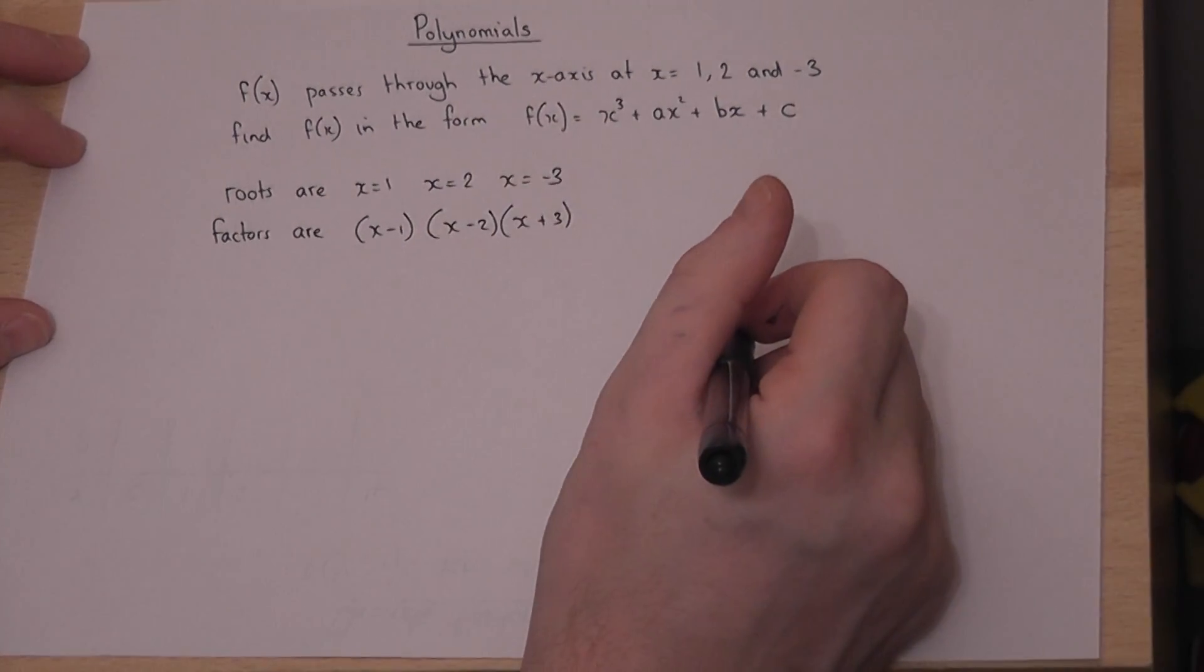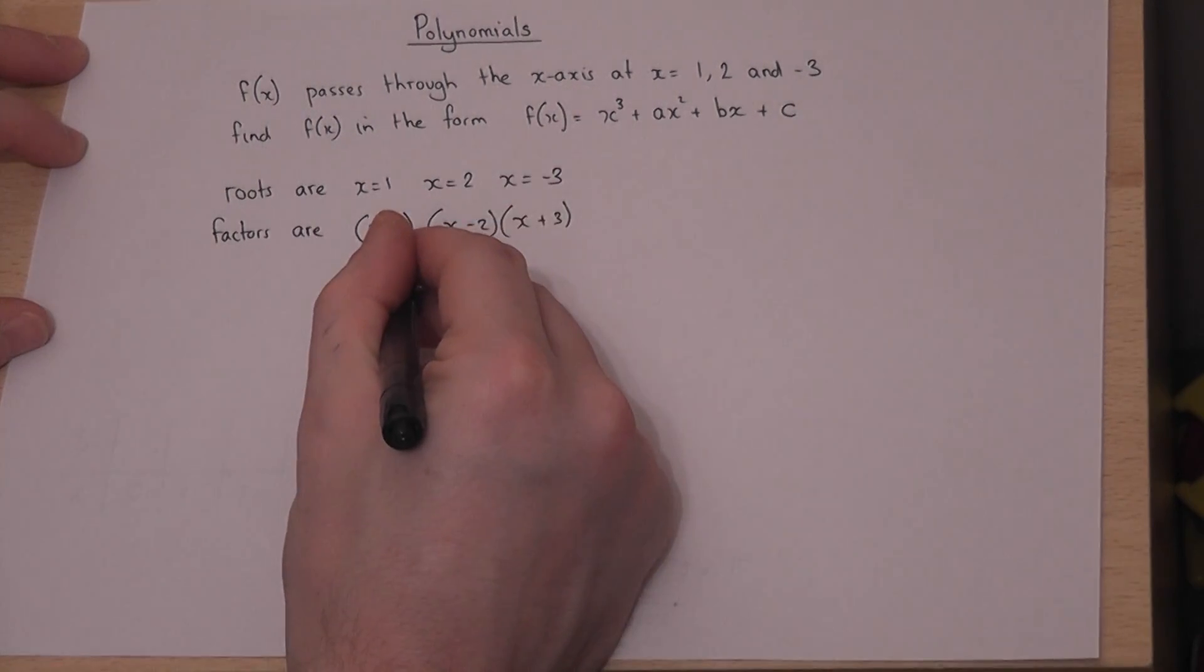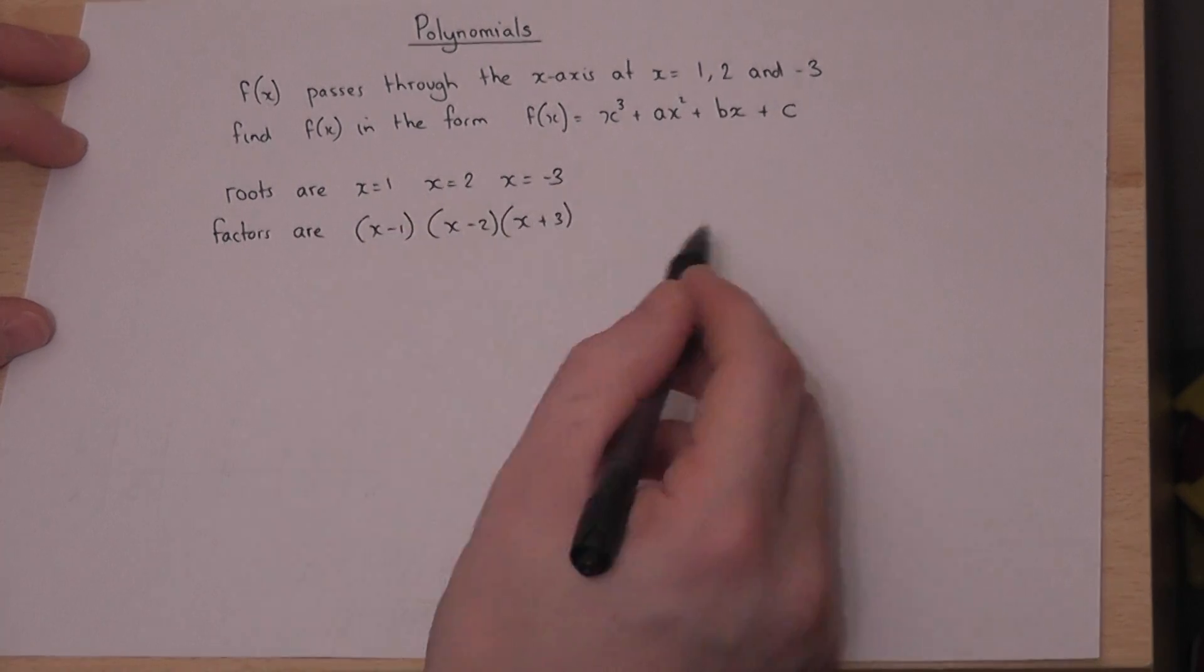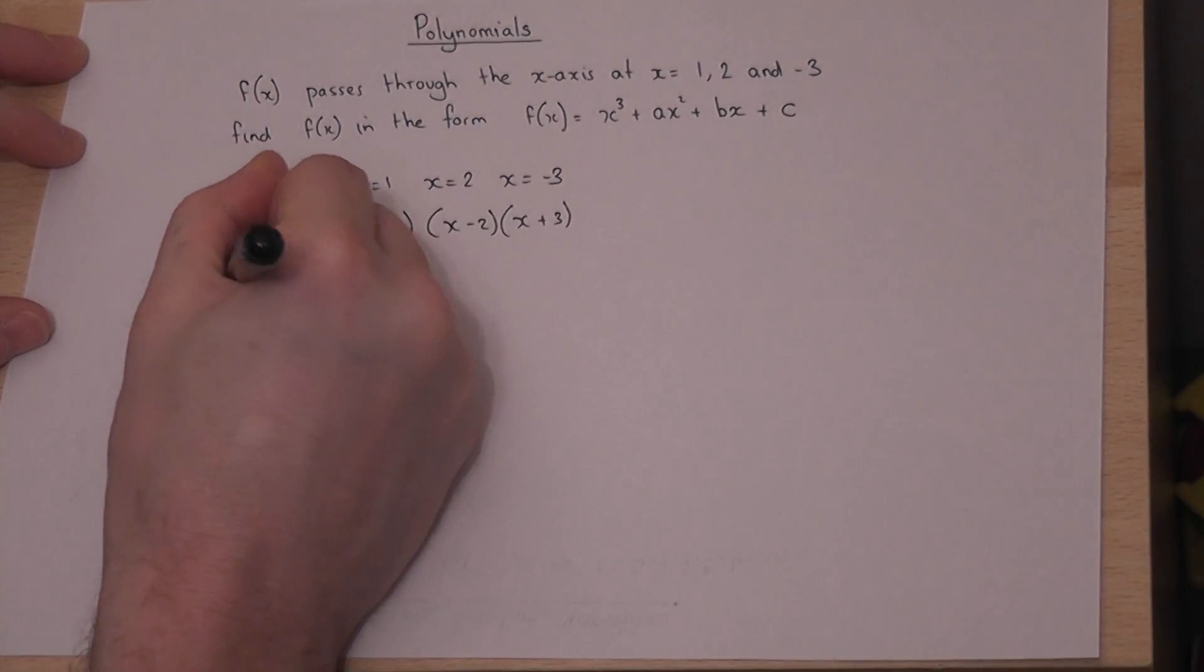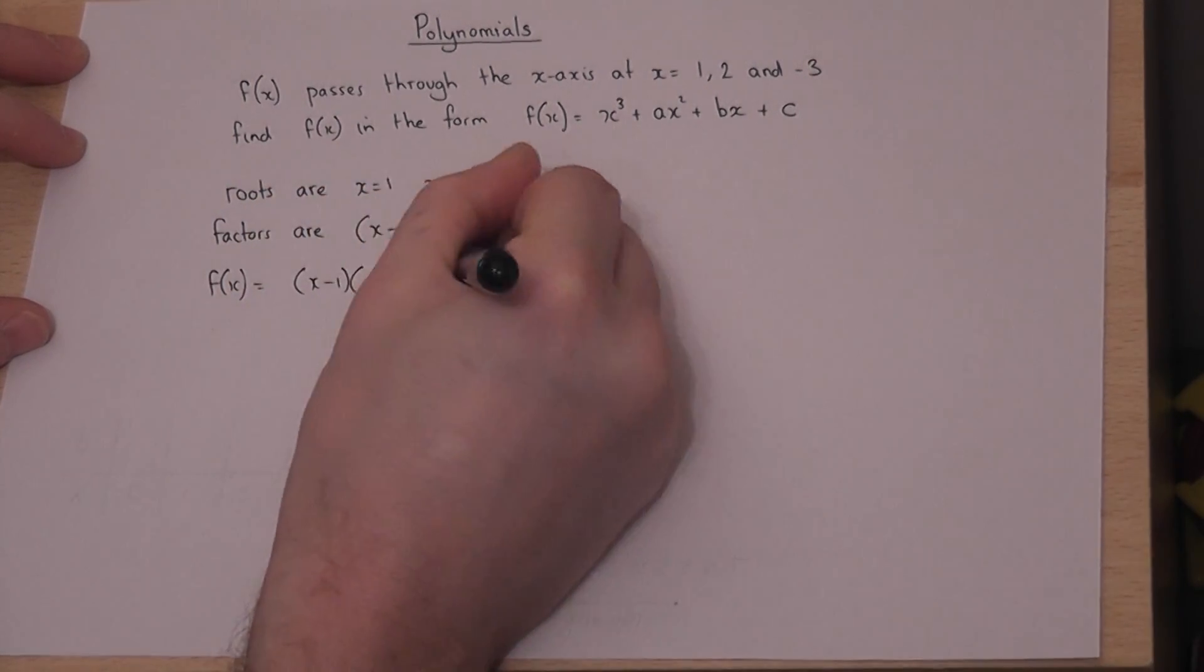The factors are the brackets with the value in there, the root with the sign changed. Therefore, f(x) equals the exact expression written above.